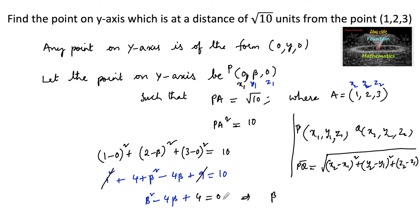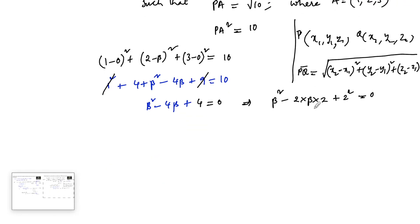So, which implies that this is in the form of beta square minus 2 into beta into 2 plus 2 square is equal to 0, just like A square minus 2AB plus B square is 0.